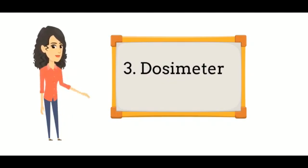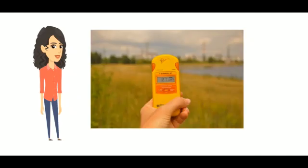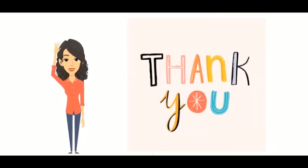A dosimeter measures exposure to ionizing radiations in dose. A dosimeter records the radiation dose received.